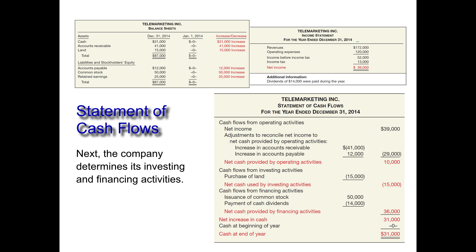If we sum those three sections — $10,000 provided by operating, $15,000 used by investing, and $36,000 provided by financing — we end up with a net increase in cash of $31,000. We started the period with zero cash, so our cash at the end of the year on the balance sheet is $31,000. So it equals out.